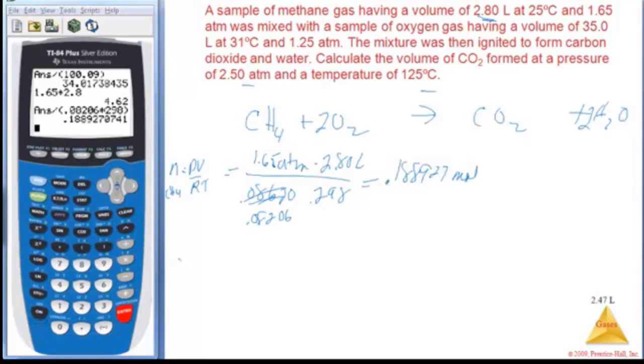Alright, so I also have to figure out how many moles of oxygen I have because it might be limiting. Let's just make sure. So moles of oxygen is going to be PV over RT. Its pressure is 1.25 atm, its volume is 35 liters, looks like it's going to be more, over 0.08206 for my R times my T. Let me see, the oxygen's at 31, so 31 and 273 is 304. Alright, I'm pretty sure this is going to be quite a bit higher.